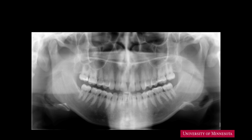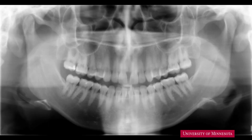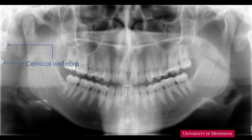Let's start from the left edge of the image, which is the right side of the patient. The radiopaque entities are the cervical vertebrae. If your patient is large, you may see only a part of the cervical vertebrae. On a child, it is possible to record a wider area of the cervical vertebrae.